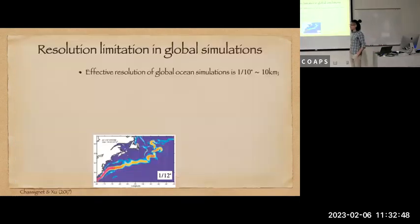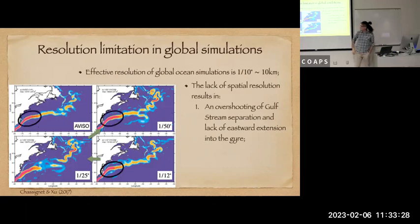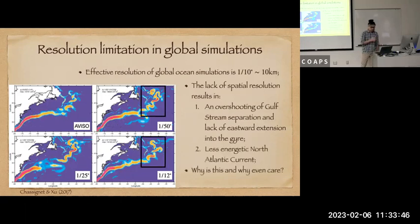Just to recap on what happens when we only have limited model resolution, this is a figure taken from Chassignet and Xu 2017. The effective resolution of global ocean simulations is on the order of one-tenth. I'm showing you a result from a 1/12 run. The paper shows a sweep of model resolution runs from 1/12, 1/25 to 1/50. This is showing eddy kinetic energy at the surface, and the top left is the estimate from satellite observations. When the model resolution is limited, the 1/12 notably has an overshoot northwards where the Gulf Stream separates. There's also a lack of eastward extension into the gyre of the separated Gulf Stream. Another point is that the North Atlantic current tends to be much weaker when the model resolution is limited.